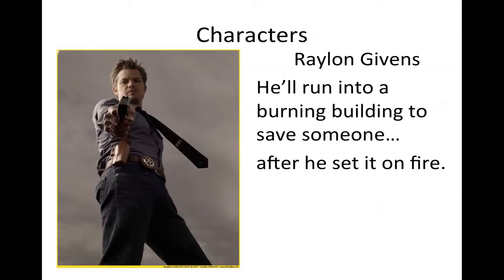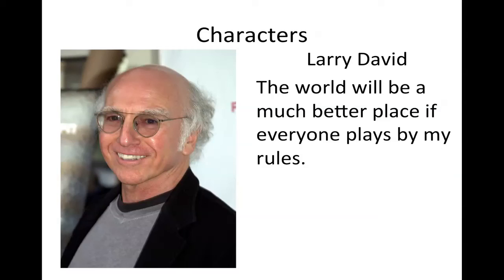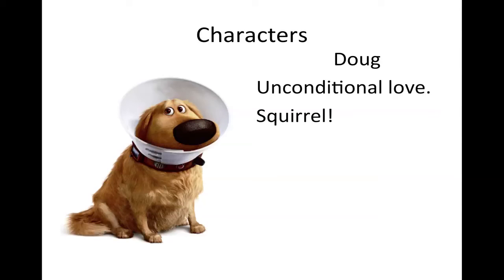There are some strong real-world characters worth thinking about. In Justified, Raylan Givens is described as the kind of person who'll run into a burning building to save someone after he set it on fire — and that's exactly how he behaves every episode. Larry David in Curb Your Enthusiasm: his theme is 'the world will be a much better place if everyone plays by my rules,' and because the world doesn't, that creates conflict in episode after episode. In Up, the dog Doug has multiple spines: unconditional love — it doesn't matter how you mistreat him, he still loves you — but he's also easily distracted, and 'Squirrel!' is another key spine in every scene.